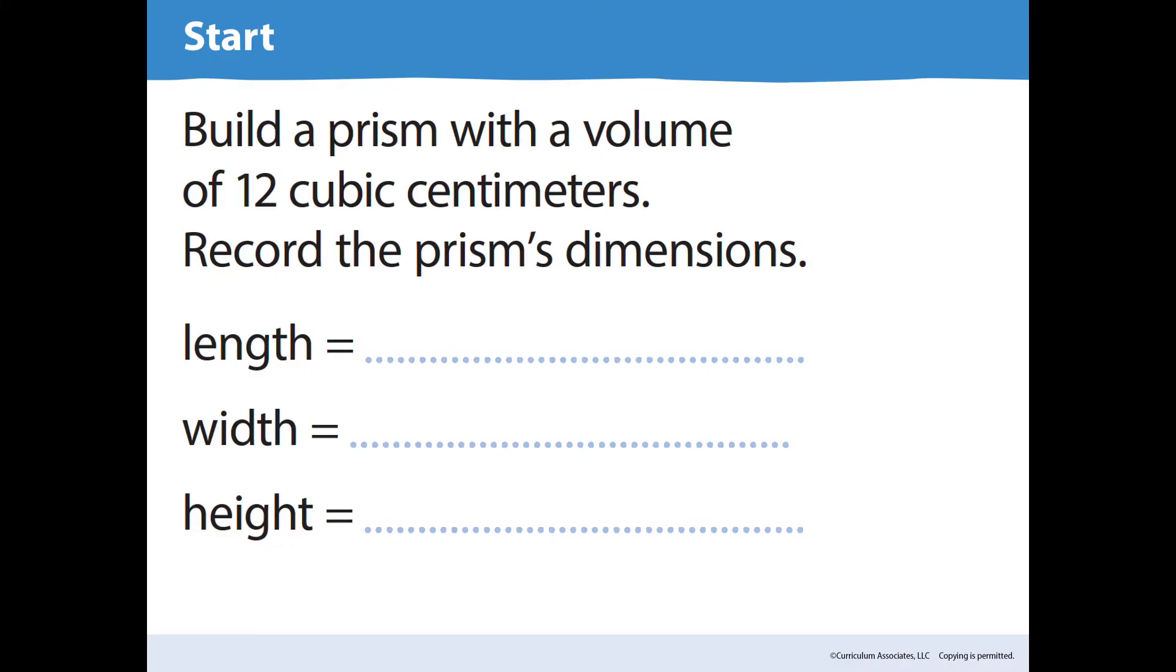To start today, build a prism with a volume of 12 cubic centimeters. Record the prism's dimensions. You can use this with building blocks, or if you don't have those available to you, you can just draw it on a piece of paper. Go ahead and pause so you can do that, and then press play and I'll give you a few different combinations that you can have.